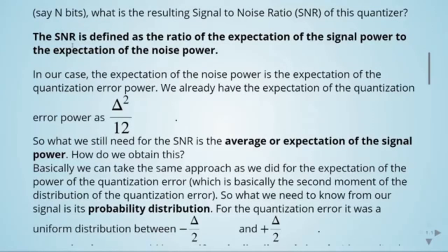The signal-to-noise ratio can be defined as the ratio of the expectation of the signal power to the expectation of the noise power. In our case, the expectation of the noise power is the expectation of the quantization error power. Last time we calculated the expectation of the quantization error power and found that it equals the step size squared divided by 12. So what we need to do now is calculate the expectation of the signal power.